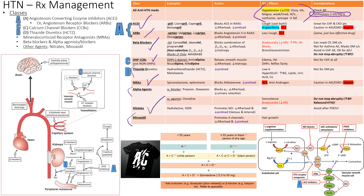Orthostasis is when your blood pressure drops when you rise, because normally your body responds to low blood pressure by raising it. But when you give an SNS blocker or a medication that vasodilates, your body tries to put out a signal to raise blood pressure, but the medication vasodilates even more, so it fails and you can fall.